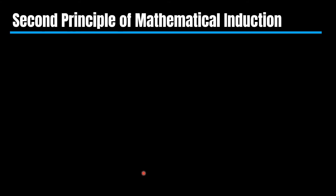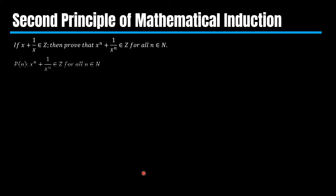To understand it, let us take an example problem. The problem says: if x plus 1 by x belongs to the set of integers, then prove that x to the nth power plus its reciprocal also belongs to the set of integers, for all n belonging to the set of natural numbers. Let us consider the statement P(n), which says the sum of x to the nth power and its reciprocal is an integer for all n belonging to the set of natural numbers.